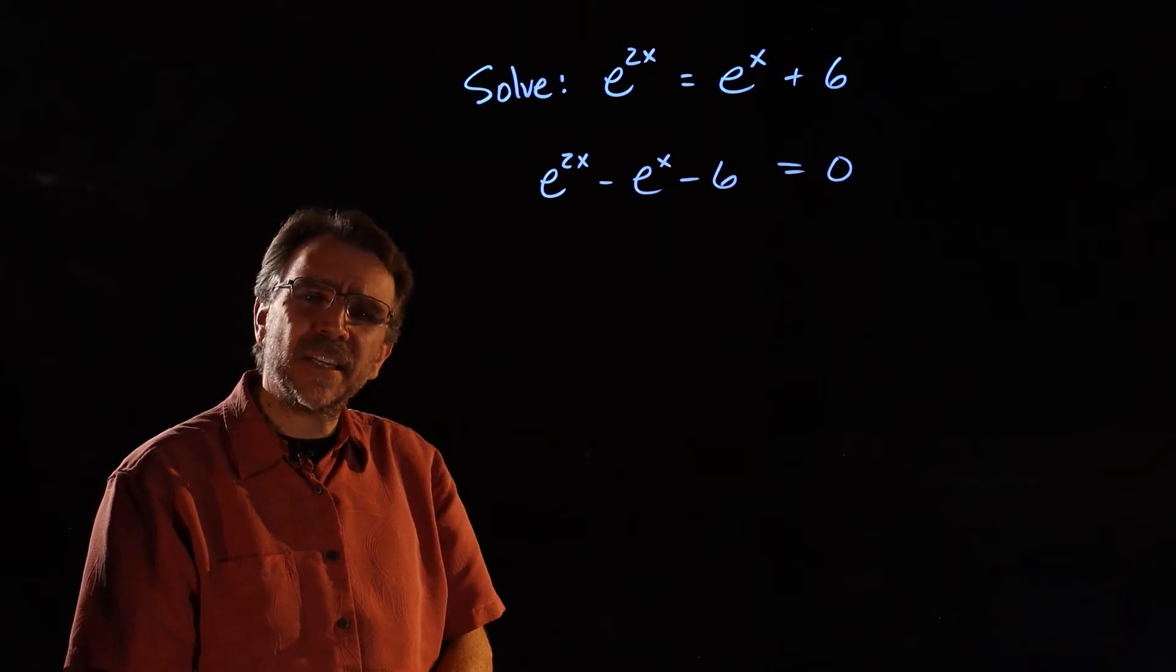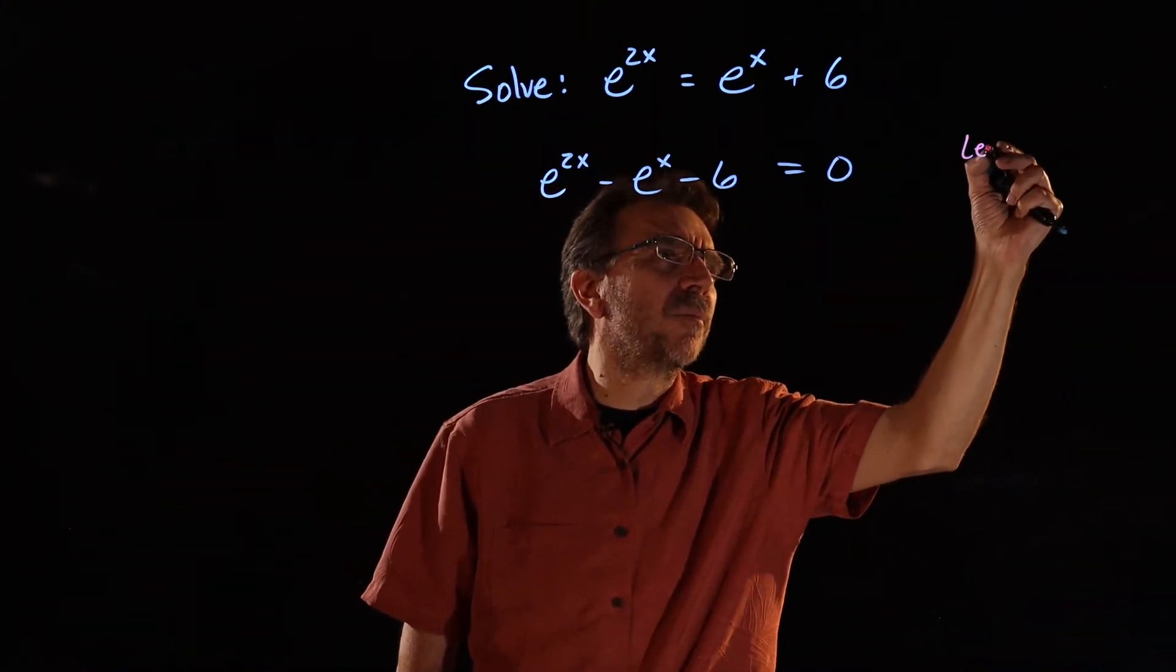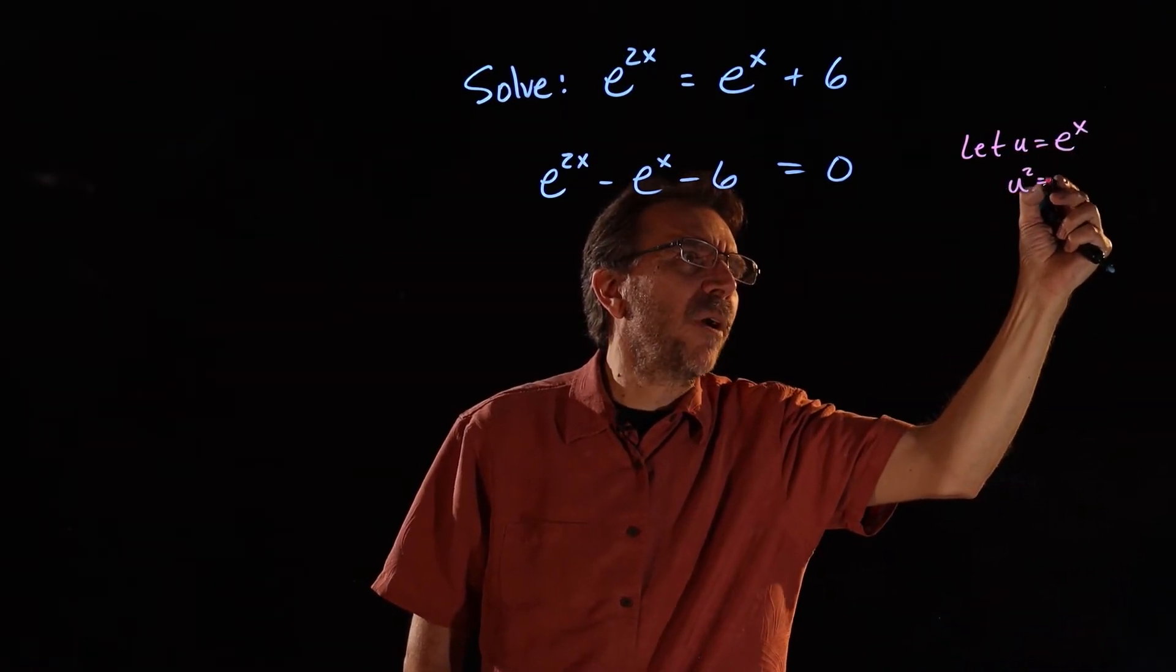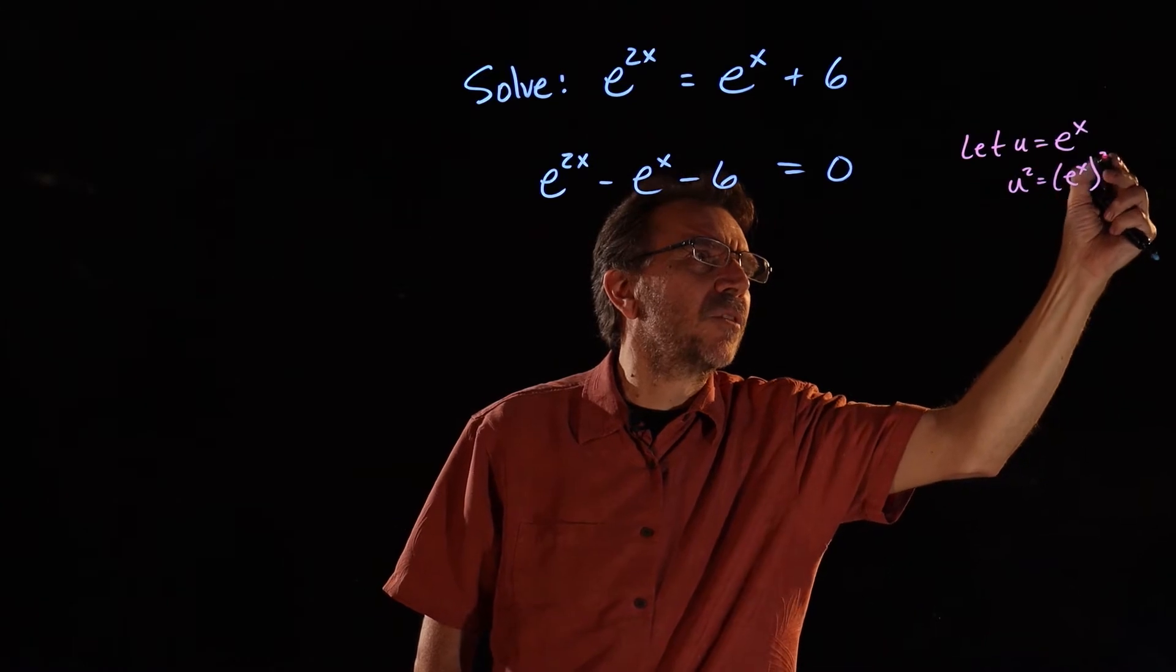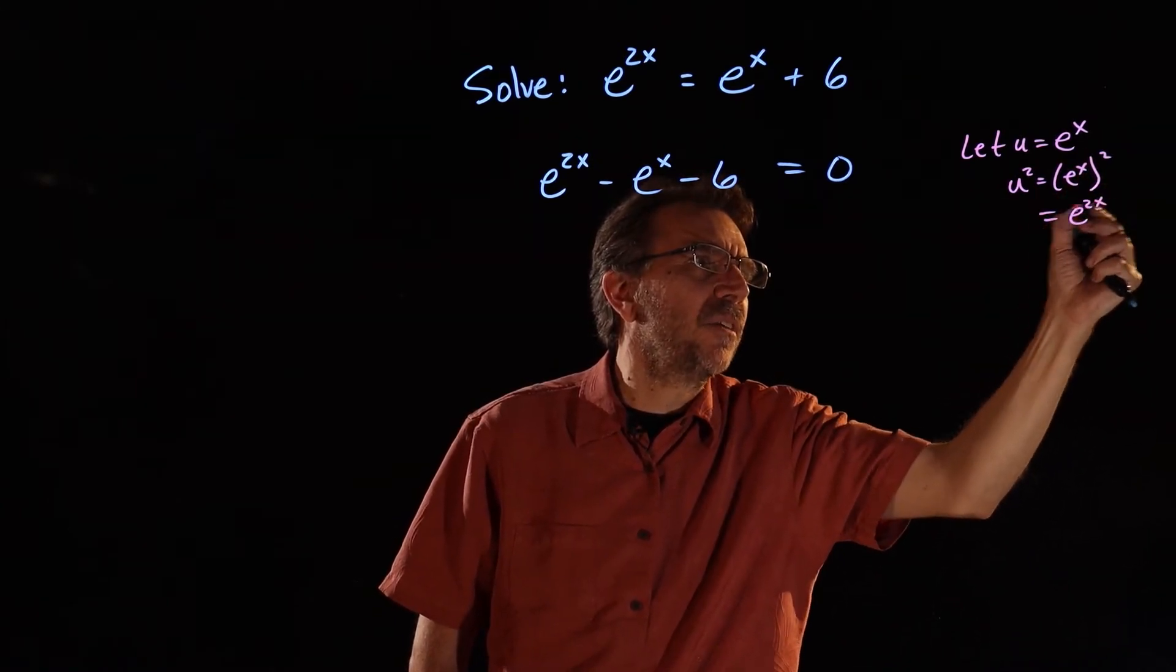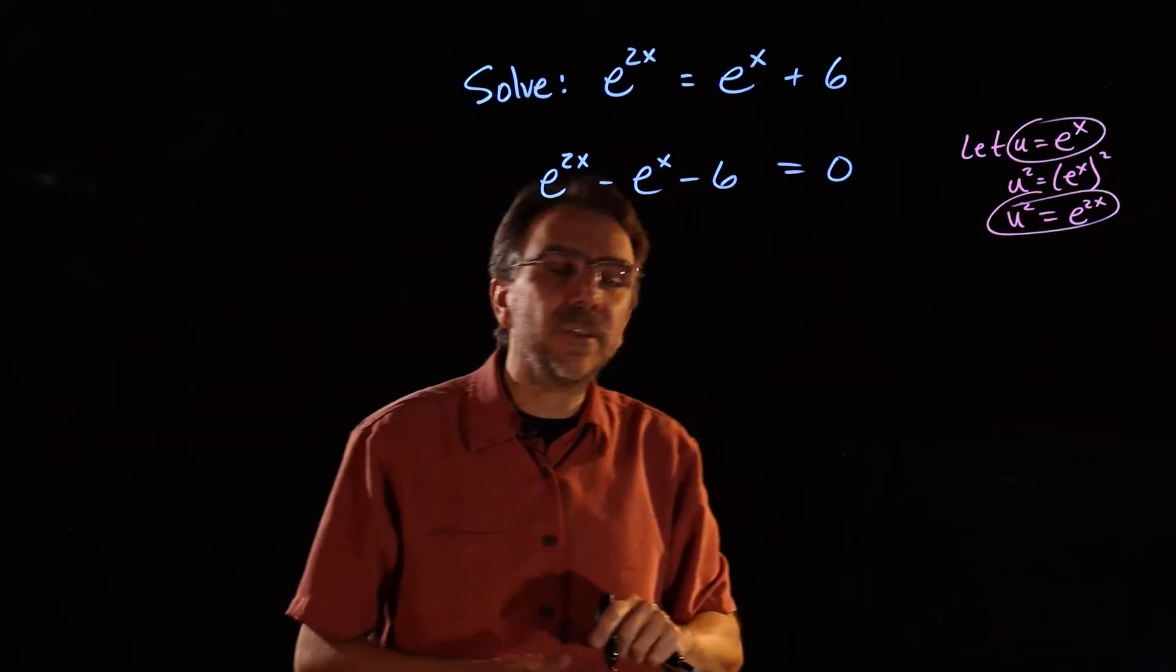So looking at this thing, we're going to treat it like a quadratic. Basically, we're going to do a u substitution. If we let u equals e to the x, well then u squared will be e to the x squared. And then power to power you multiply, so that's actually e to the 2x. So u squared is e to the 2x, u is e to the x.